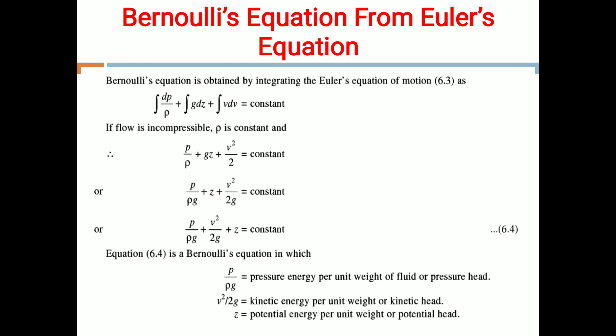The Euler equation of motion, explained in the last lecture, is given as: integration of dp by rho, plus integration of G with respect to Z, plus integration of V dv, is equal to constant. After integrating this equation, if the flow is incompressible, then rho is constant.